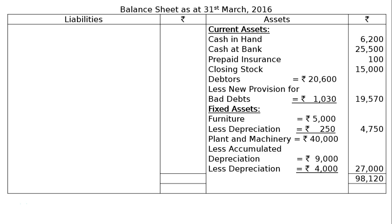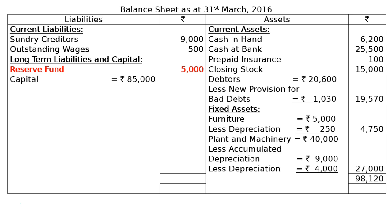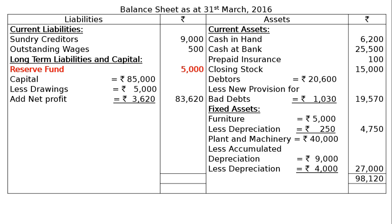On the liability side, current liabilities are: sundry creditors rupees 9,000 and outstanding wages rupees 500. Under long-term liabilities and capital: reserve fund rupees 5,000, capital rupees 85,000 less drawings rupees 5,000, then add net profit rupees 3,620 — giving rupees 83,620 in the final column. The total of the liability side is rupees 98,120, balancing with the asset side. This is the final answer.